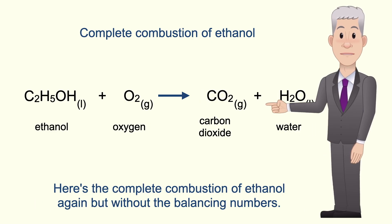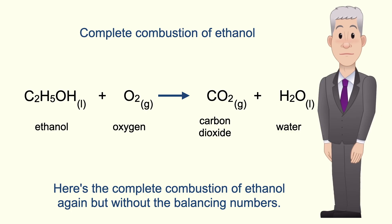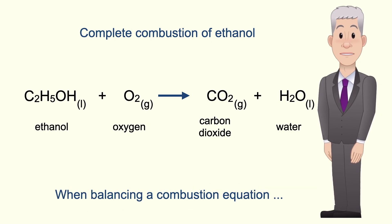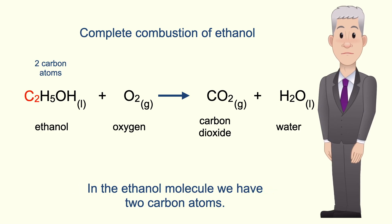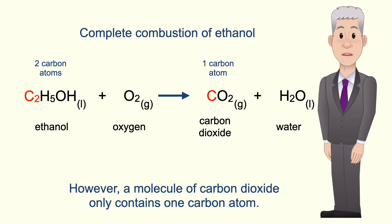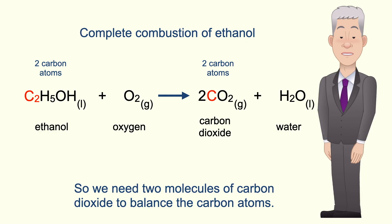Here's the complete combustion of ethanol again but without the balancing numbers. When balancing a combustion equation I'd recommend starting with the number of carbon atoms. In the ethanol molecule we have two carbon atoms. However, a molecule of carbon dioxide only contains one carbon atom, so we need two molecules of carbon dioxide to balance the carbon atoms.